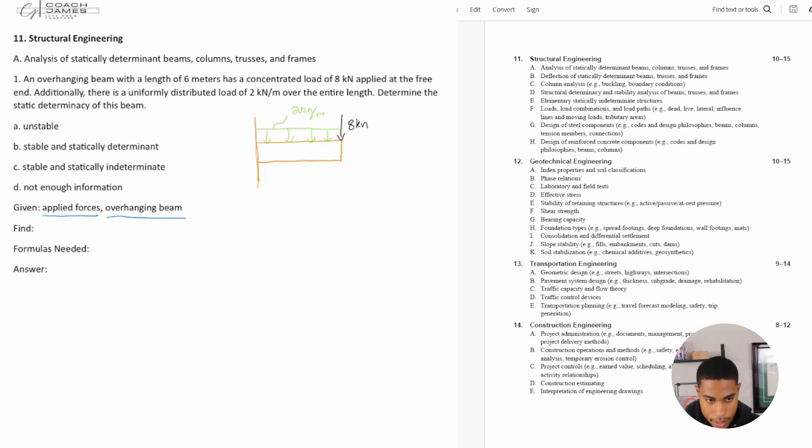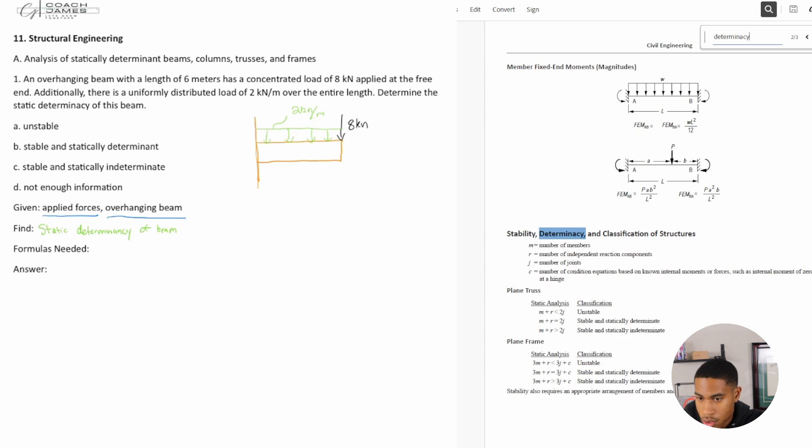Okay, so what are we trying to find? We're trying to find the static determinancy of the beam. So what formulas might we need for this? I'm going to pretend as if I don't know. I would start by looking through the handbook. And if I'm trying to find static determinancy, then I probably would search determinancy to figure out what that even is, right?